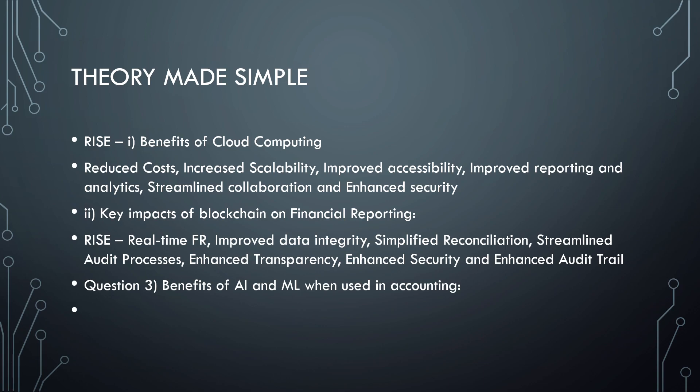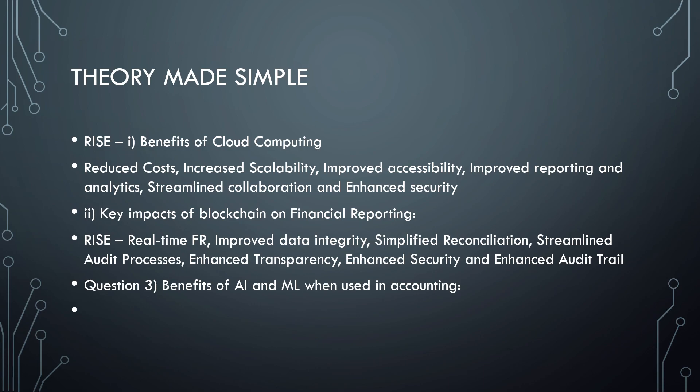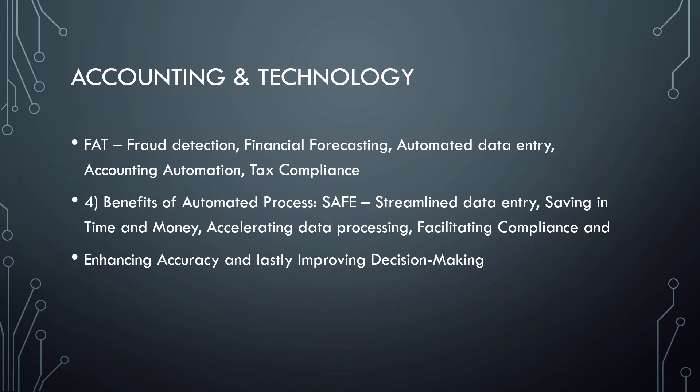Moving on to the next question: briefly explain the benefits of artificial intelligence and machine learning when used in accounting. When these two are combined, candidates who know these things will automatically be receiving FAT paychecks. So what is FAT? F for Fraud detection, A for Financial forecasting, A for Automated data entry, another A for Accounting automation, and T for Tax compliance.